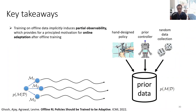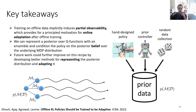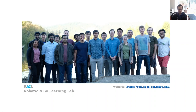Key takeaways: training on offline data implicitly induces partial observability, providing a principled motivation for online adaptation after offline training. We can represent a posterior over Q-functions with an ensemble and condition the policy on the posterior belief over the underlying MDP distribution. Interesting future directions include developing better methods for representing the posterior and better methods for adapting it — this ensemble method is perhaps one of the crudest ways to represent these posteriors. To summarize, I talked about how we could use offline data to improve safety by staying in distribution, either in a task-agnostic way (Lyapunov density models) or a task-specific way (APB). I'd like to acknowledge Katie Kang, who led the research on LDMs, and Debo Ghosh, who led the work on APB. Thank you all for listening.